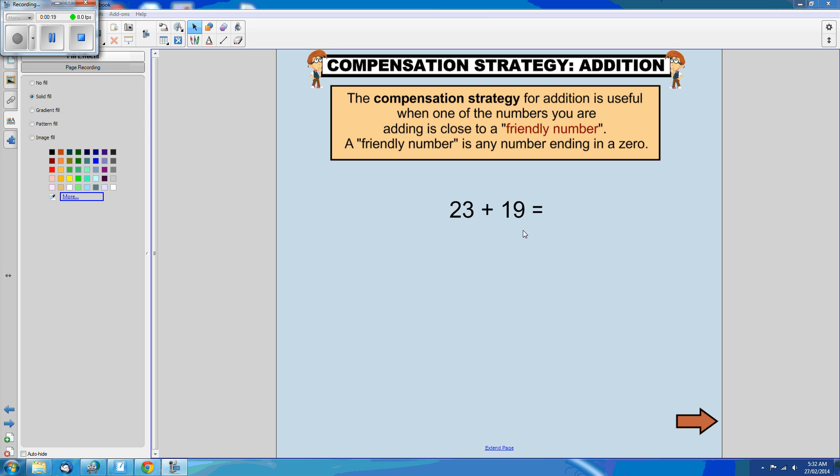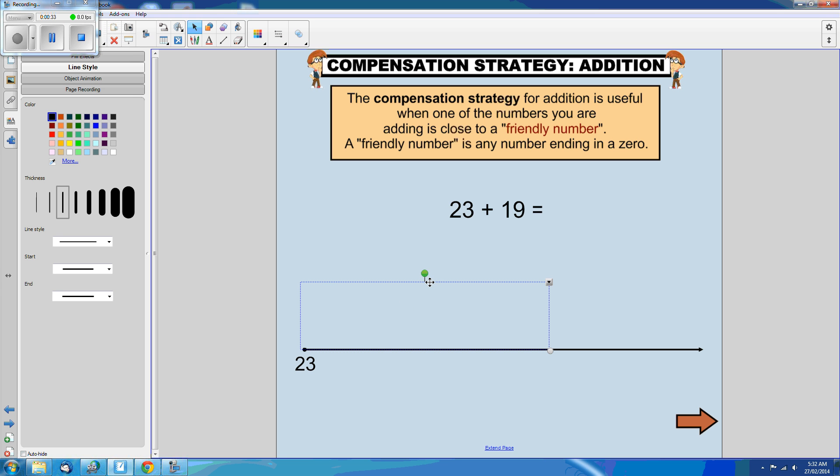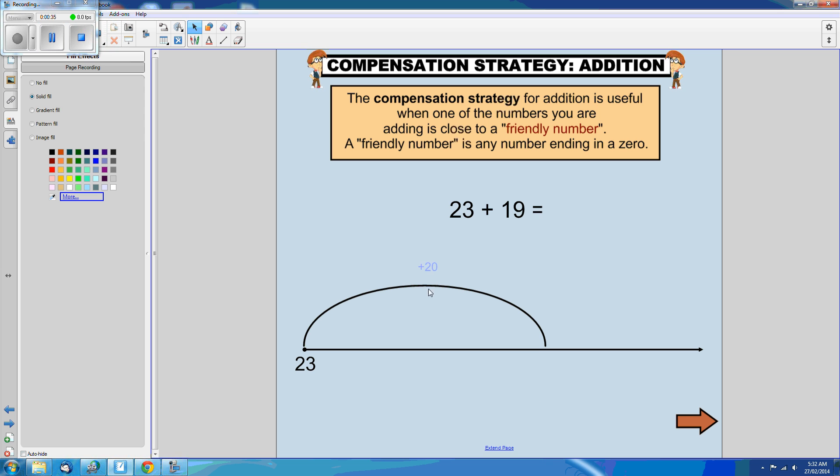That's right, it's close to 20. I'm going to have an open number line here, start with my 23, and because 19 is close to 20, I'm going to add 20.